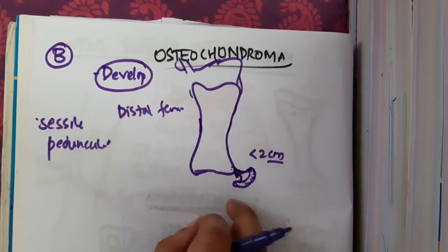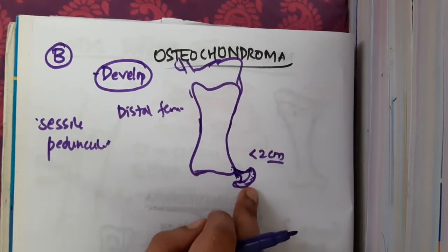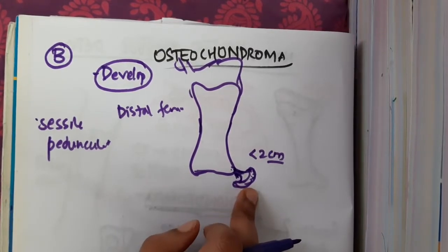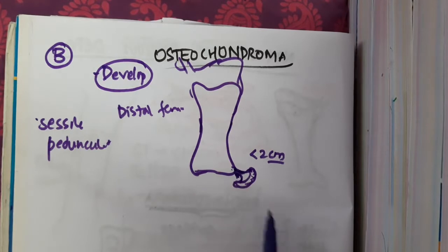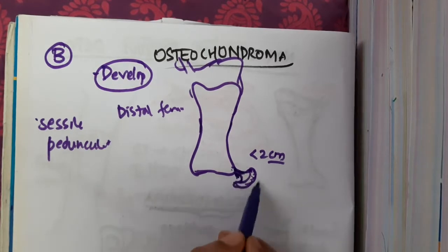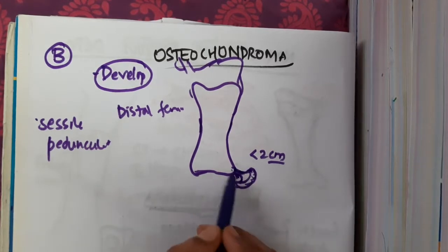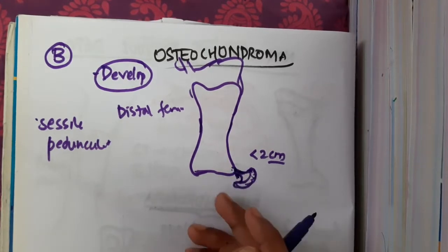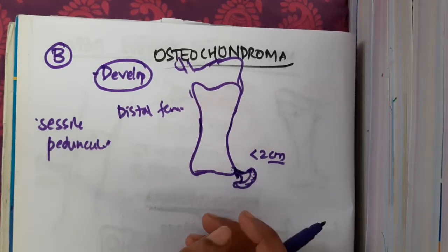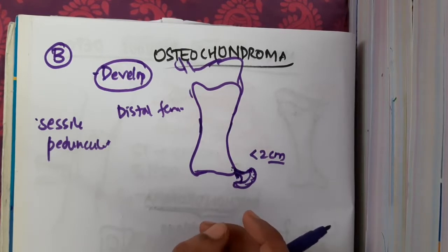On x-ray you cannot see the cartilage directly. You will see a radiolucent area in the region of the lesion.